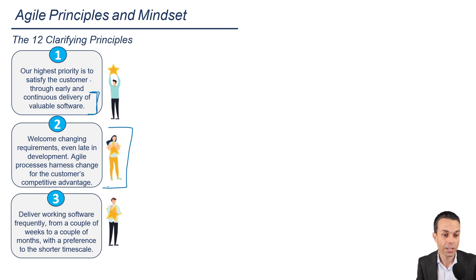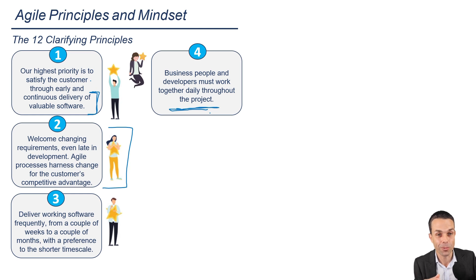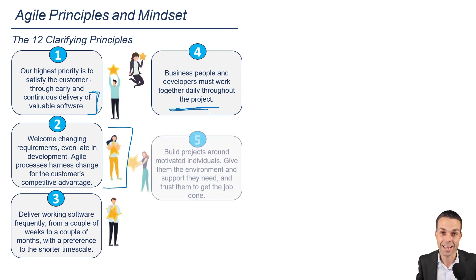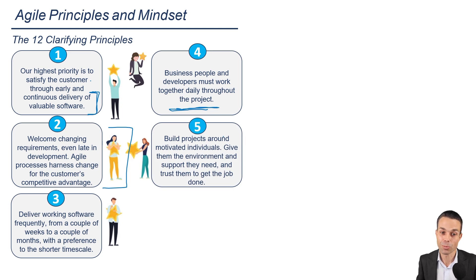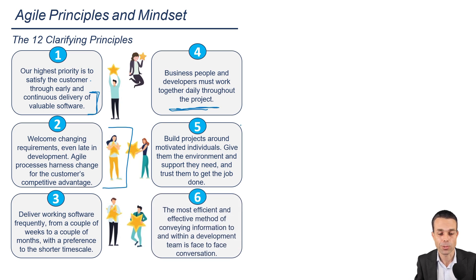Principle three: we deliver working software frequently, from a couple of weeks to a couple of months, with a preference for the shorter timescale — something every two weeks or at least every few months. Principle four: business people and developers must work together daily throughout the project — communicating face to face, getting fast answers instead of waiting days for an email reply. Principle five: build projects around motivated individuals; give them the environment and support they need and trust them to get the job done — for example, a product owner who works in the area they're creating value for will care deeply about the product.